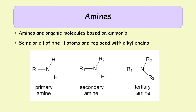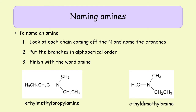Primary, secondary, and tertiary mean slightly different things here than when we use that terminology for alcohols. A primary amine means there is one carbon chain coming off the nitrogen. A secondary amine means there are two carbon chains coming off the central nitrogen. A tertiary amine means there are three carbon chains coming off the nitrogen in the center.